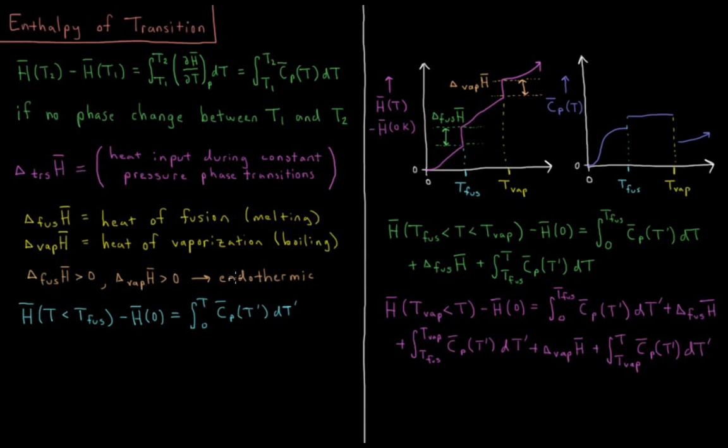Both of these are greater than zero. ΔH-bar of fusion and vaporization are greater than zero. These are what are called endothermic processes. They absorb heat. It takes heat to break up the interactions of a solid to make it into a liquid, or break up the interactions of a solid or a liquid to turn it into a gas.